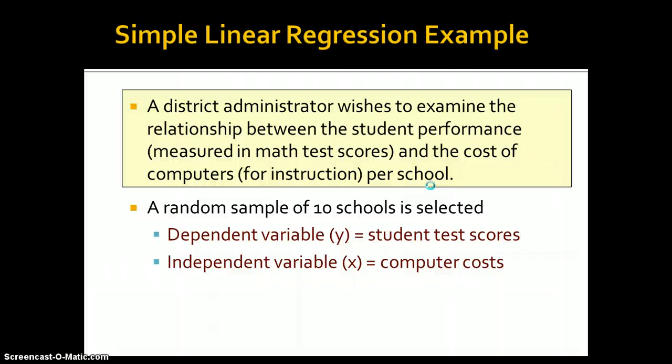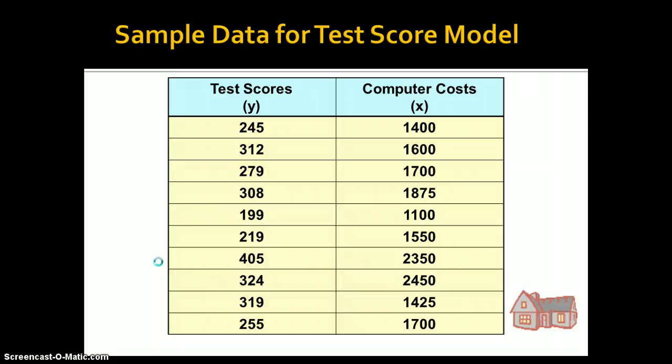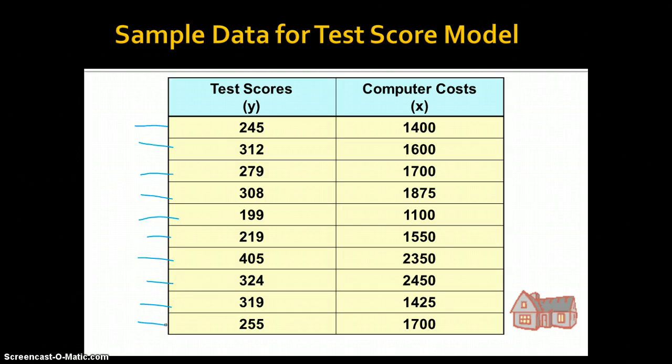Let's look at an example. I'll go through this example as laid out, and then also do it live in SPSS so you can see how it looks. A district administrator wishes to examine the relationship between student performance — measured in math test scores — and the cost of computers for instruction per school. They took a random sample of 10 schools. The dependent variable is student test scores; the independent variable is computer costs. Each row in the data is a different school, with average math test scores and average computer costs.